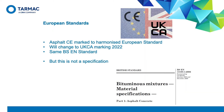Asphalt is CE marked to the harmonised European standard BSEN 13108, with different parts of this standard representing the different mix types. Part 1 covers asphalt concrete, part 4 covers hot rolled asphalt, part 5 covers stone mastic asphalt, and part 7 covers porous asphalt. Other parts specify type testing requirements and factory production control.